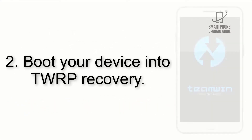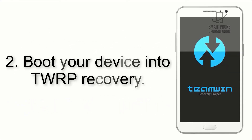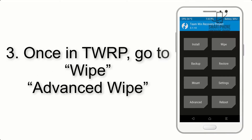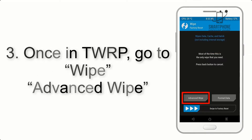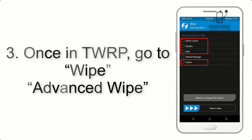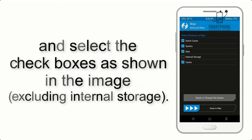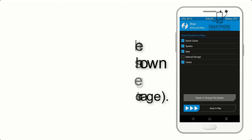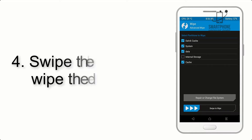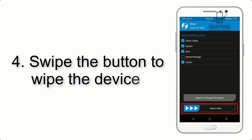Step 2: Boot your device into TWRP recovery. Once in TWRP, click on the Wipe Advanced button and select the checkboxes as shown in the image, including internal storage. Step 4: Swipe the button to wipe the device.